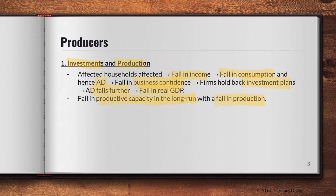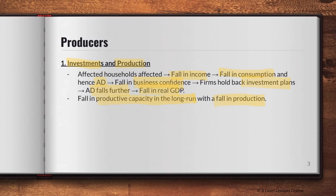When looking at producers, focus on two things: first, how their supply or production is affected by unemployment, and second, how their profits are affected. You can include the point about a fall in revenue leading to a fall in profits, since producers' main goal is to maximize profits.